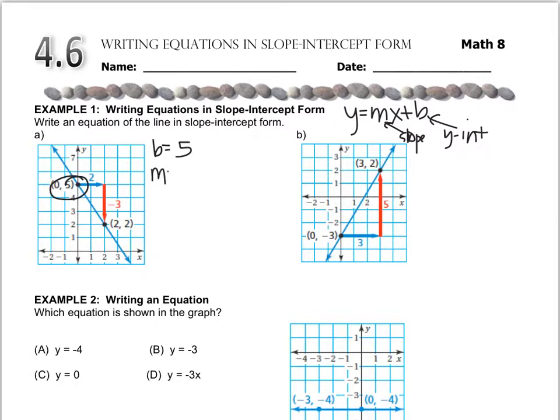The slope you have to count the boxes. So to go from this point, (0, 5), down to (2, 2), I'm going to go down 3 boxes and to the right 2. So that gives me a slope of negative 3 over 2. Just pay attention to which way you're moving. We went down which is negative and to the right which is positive.